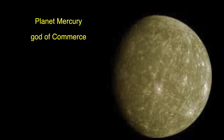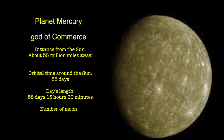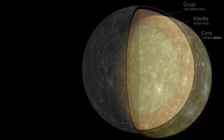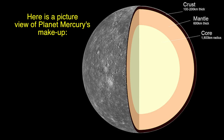Planet Mercury, God of Commerce. Distance from the sun: about 36 million miles away. Orbital time around the sun: 88 days. Day length: 58 days, 15 hours, and 30 minutes. Number of moons: zero. Atmosphere: none. Here is a picture view of Planet Mercury's makeup — one: crust, two: metal, three: core.